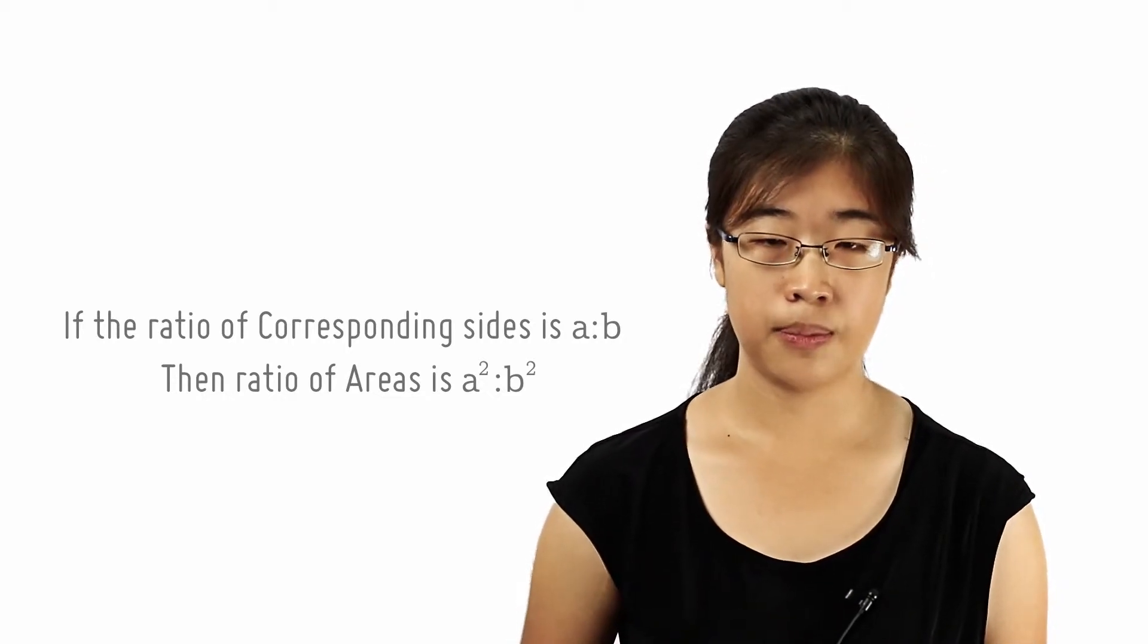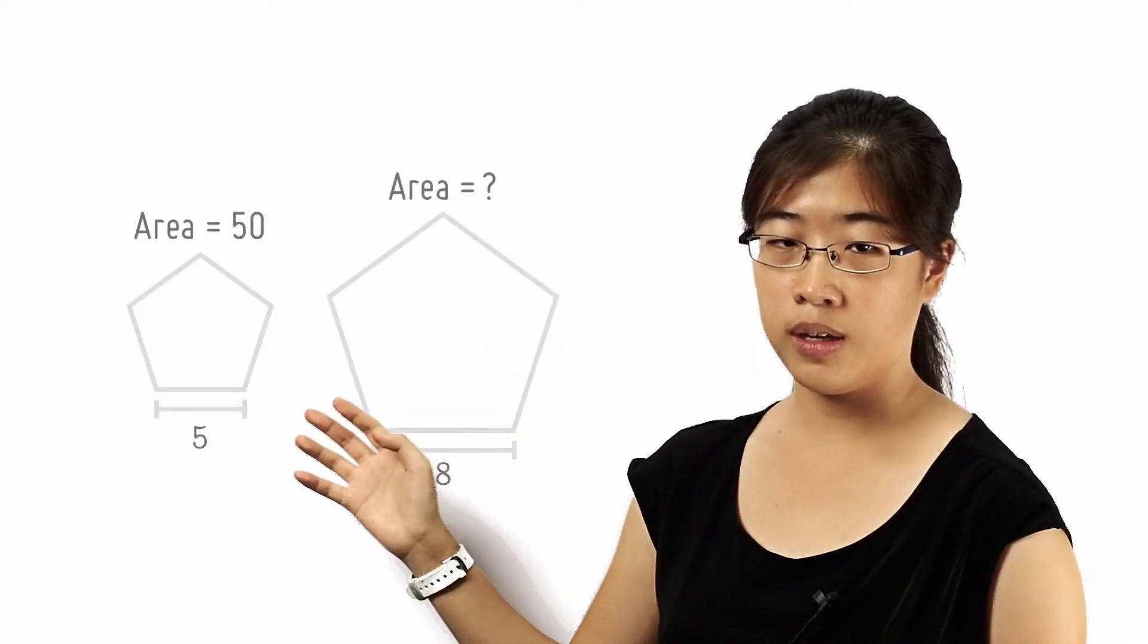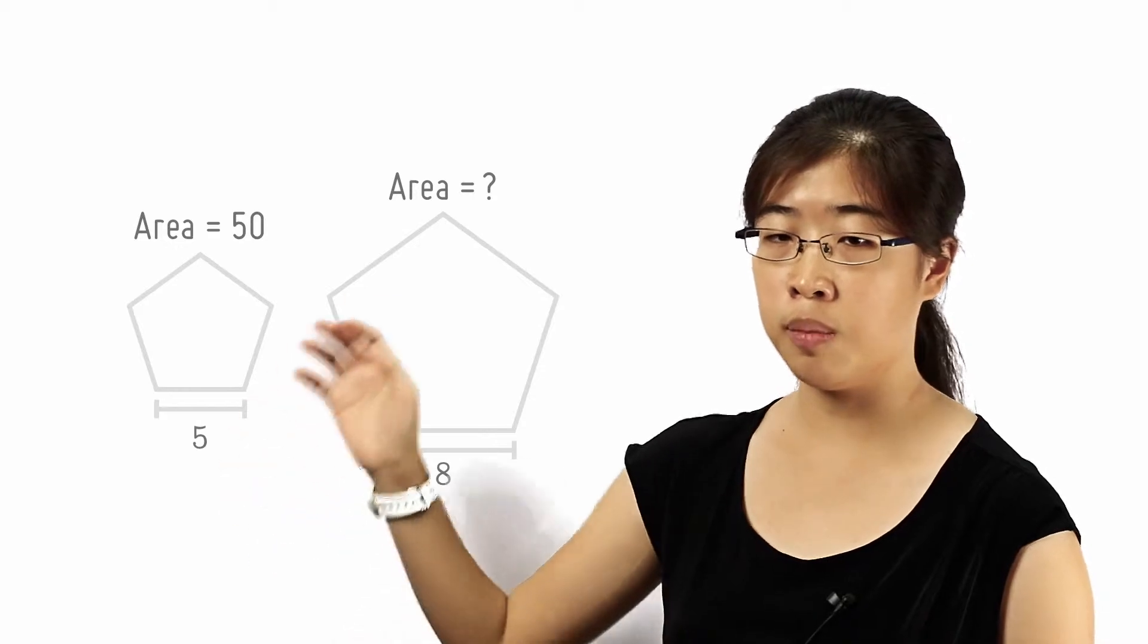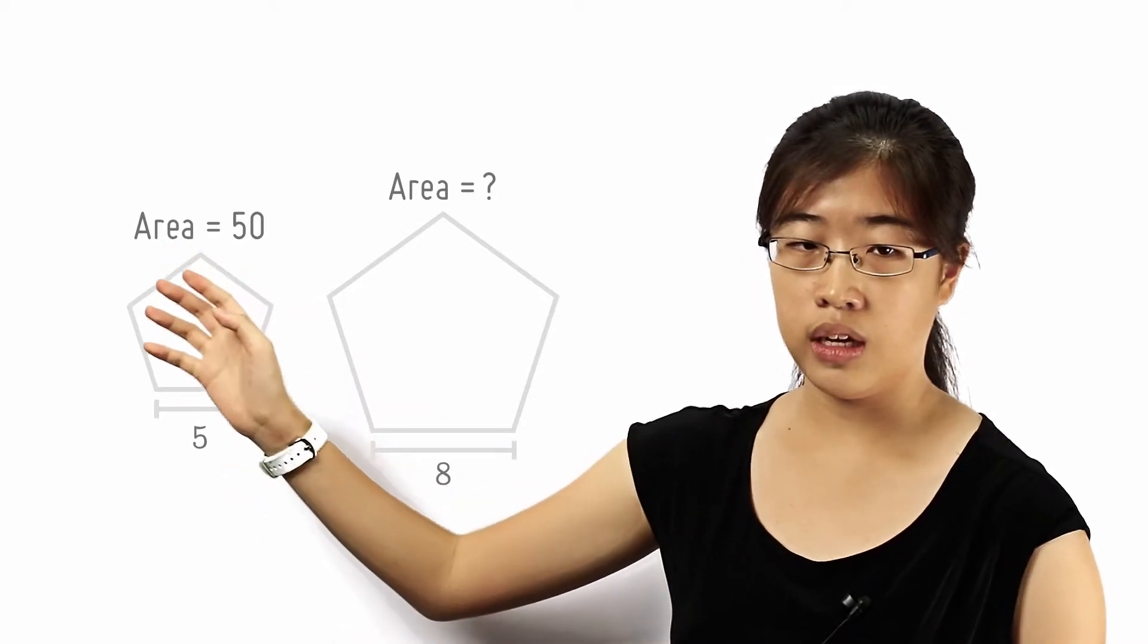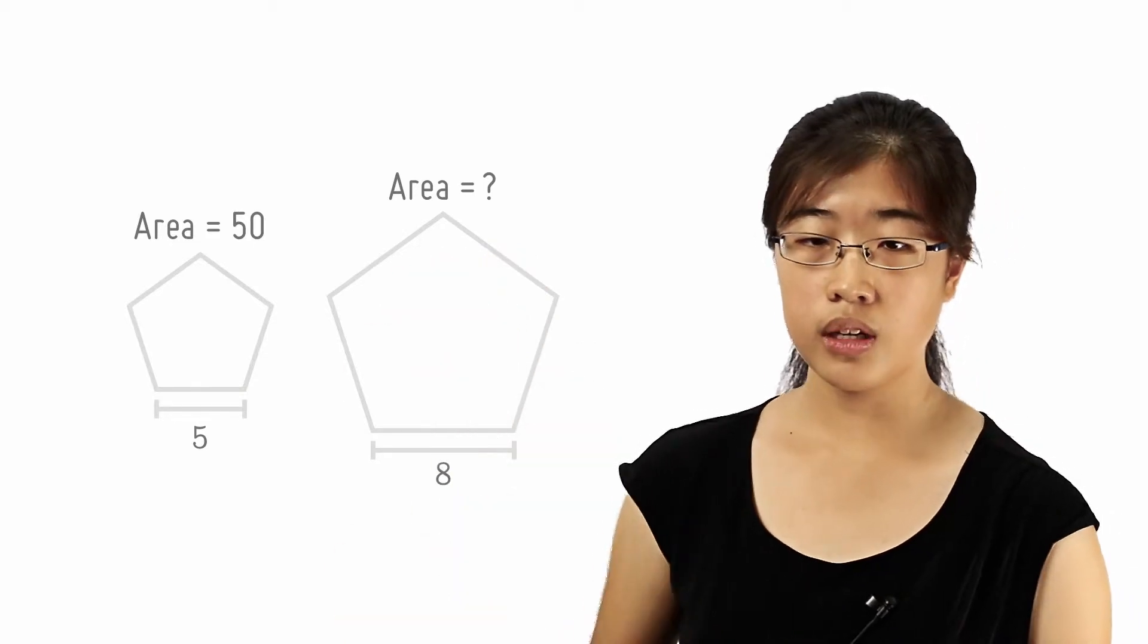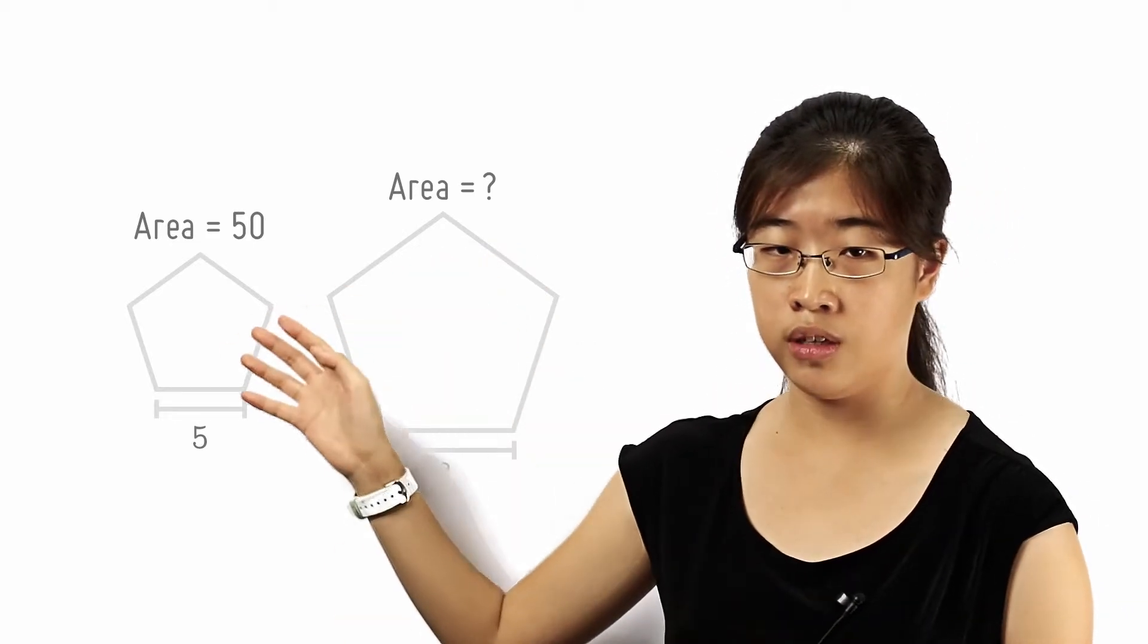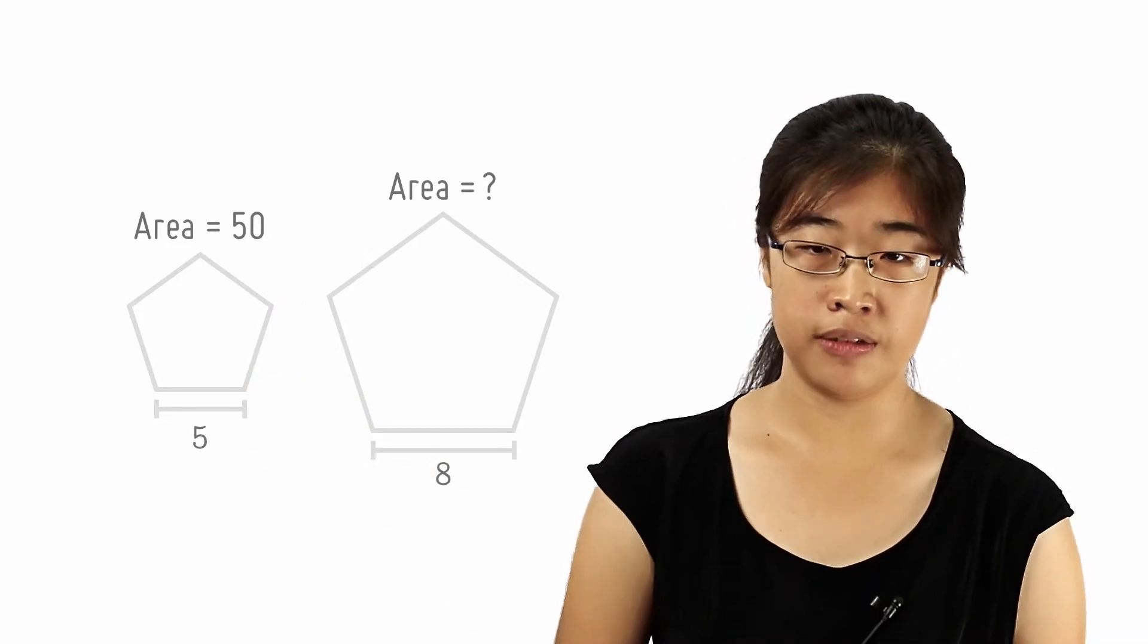Let's take a look at one question. Look at these two polygons. It is given that they are similar. We know that the length of the smaller polygon is 5 and the corresponding length in the bigger polygon is 8. If the area of the smaller polygon is 50, what is the area of the bigger polygon?